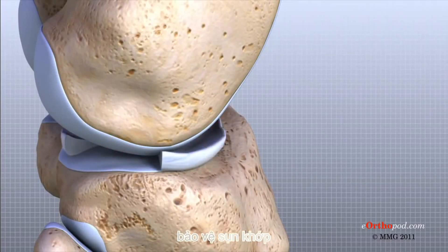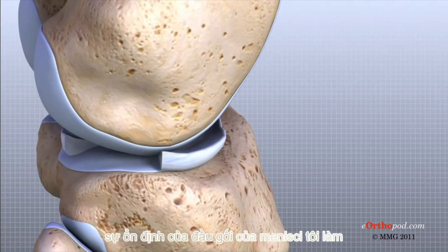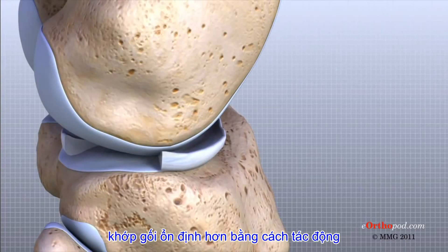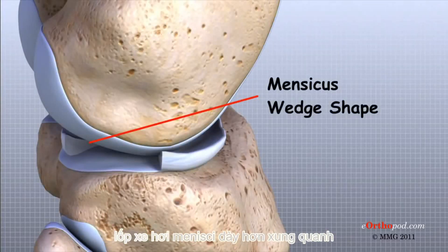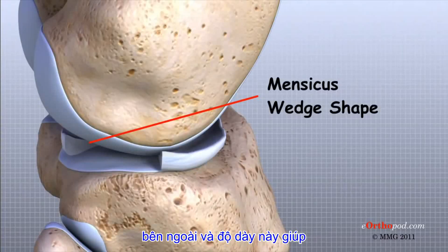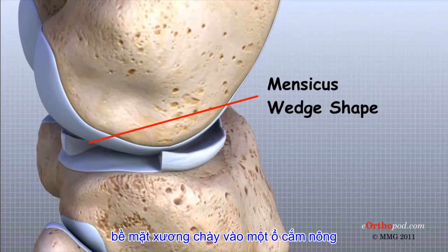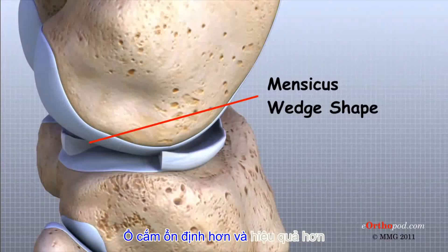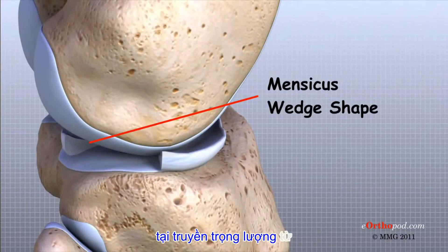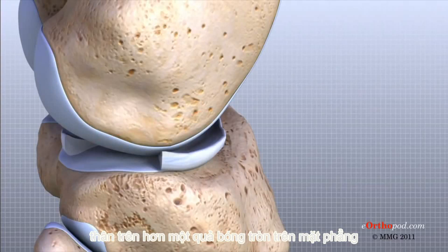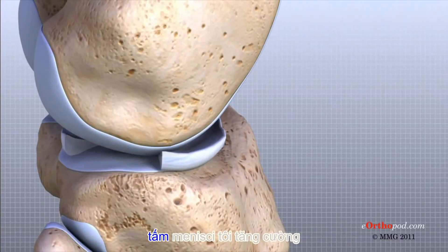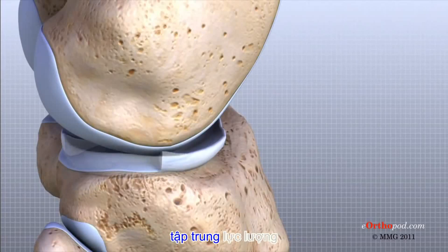In addition to protecting the articular cartilage, the menisci help the ligaments with stability of the knee. The menisci make the knee joint more stable by acting like a wedge set against the bottom of a car tire. The menisci are thicker around the outside, and this thickness helps keep the round femur from rolling on the flat tibia. The menisci convert the tibial surface into a shallow socket, which is more stable and more efficient at transmitting the weight from the upper body. The menisci enhance the stability of the knee and protect the articular cartilage from excessive concentration of force.